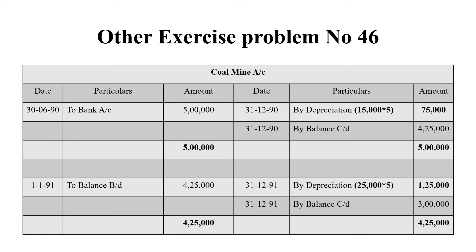On 1/1/1991, the balance brought down is Rs.4,25,000. In 1991, total extraction is 25,000 tons. Depreciation is 25,000 × Rs.5 = Rs.1,25,000, and the balancing figure carried forward is Rs.3,00,000.